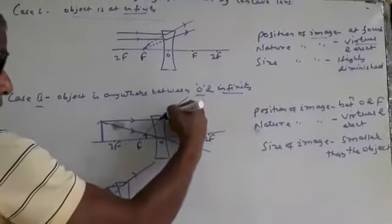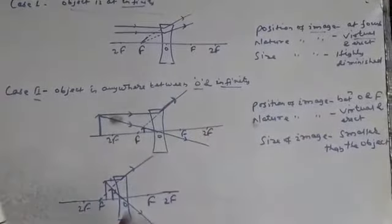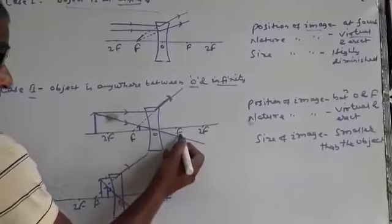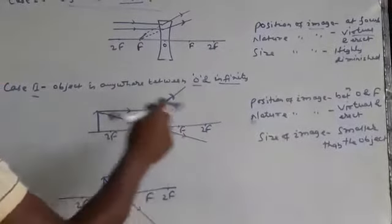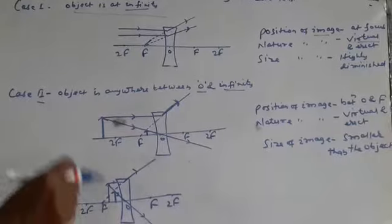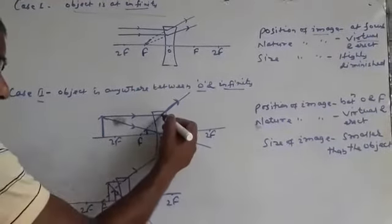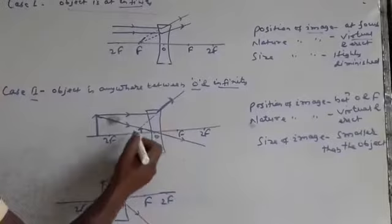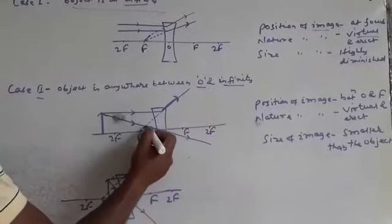This means first ray is going along this direction. Second ray is going along this direction. No chance to meet anywhere. That's why no chance to form the real image. Then this ray is produced backward. Both the rays intercept at this point.